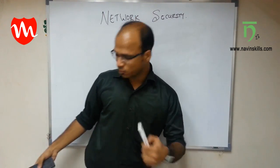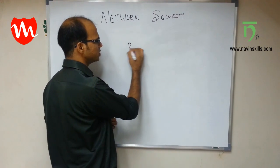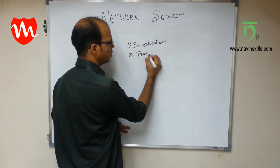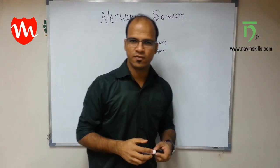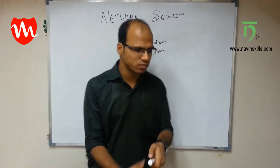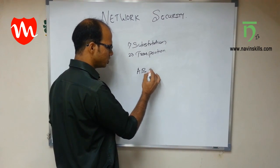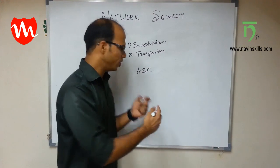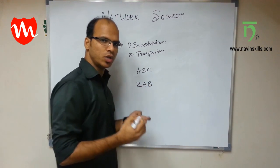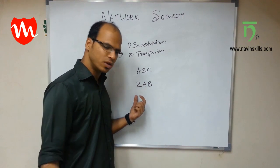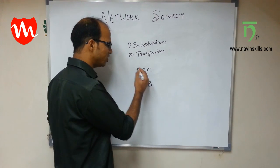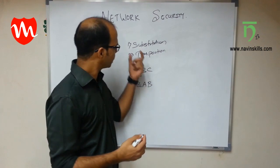When we talk about cryptography, we can achieve it in two ways. One is called the substitution method and the second is called the transposition method. In substitution, you have a text and you change it into a different format. For example, I will change A to Z, B to A, and C to B. So I am converting each character into its substitute. This is called substitution.